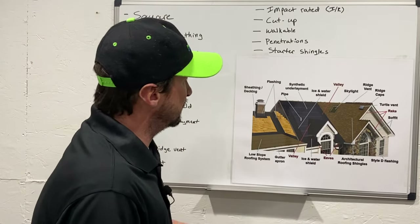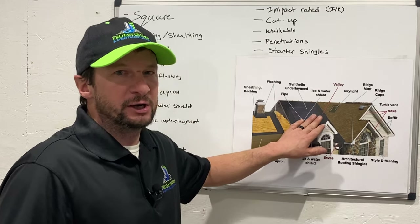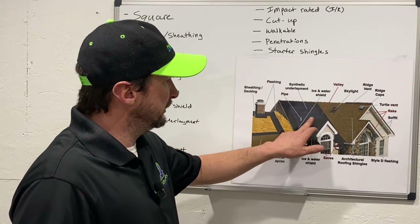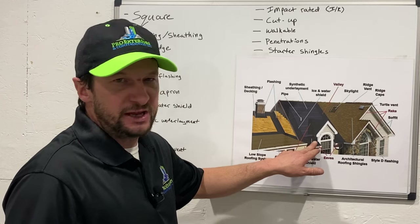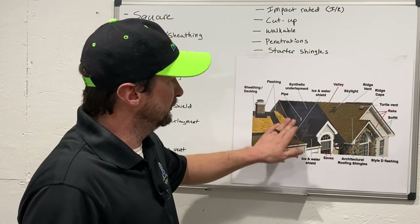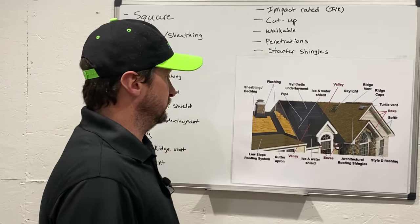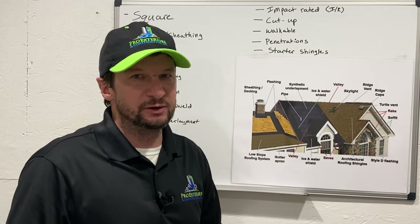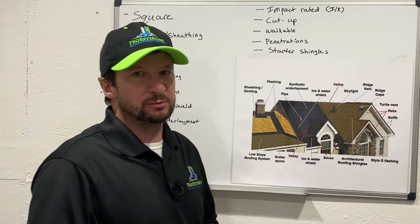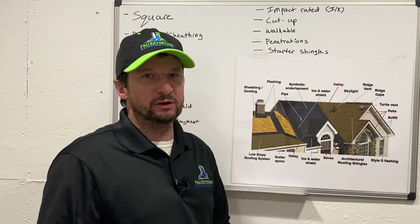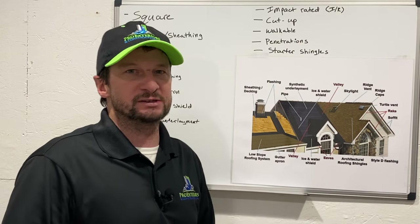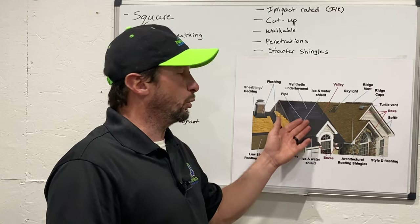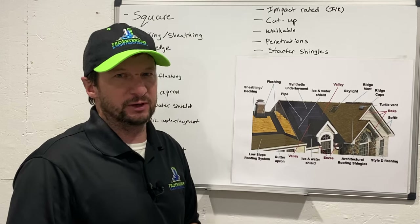The next one is synthetic underlayment. That's going to cover all the other roof area not covered by the ice and water shield — it doesn't go in valleys or at eave edges, but covers the rest. Some people use the old-style asphalt saturated felt, but we do not. The synthetic underlayment is a far superior product — easier to work with, safer to walk on, doesn't tear as easily — so we upgrade every single roof to it.